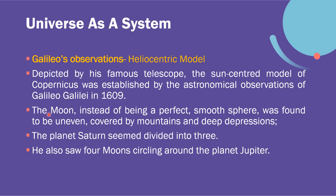The moon, instead of being a perfect smooth sphere, was found to be uneven, covered by mountains and deep depressions. The planet Saturn seemed to be divided into three. He also saw four moons circling around the planet Jupiter. These were all observations made by Galileo by directly observing the planets and the universe system through his telescope, also in 1609.